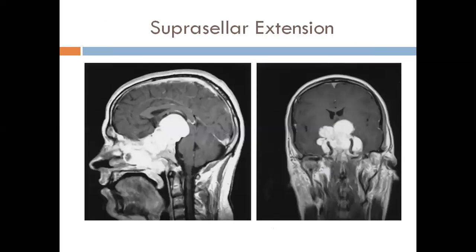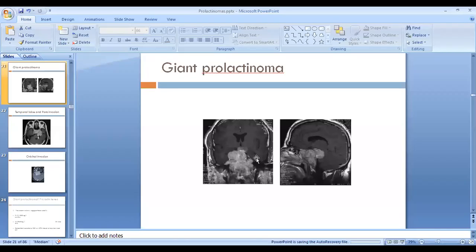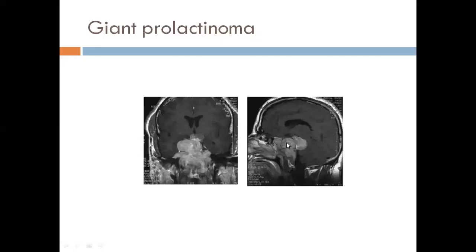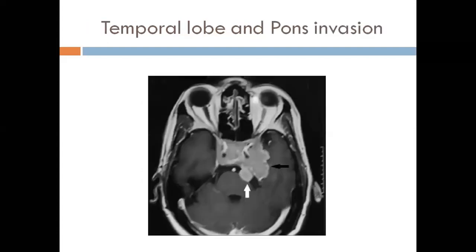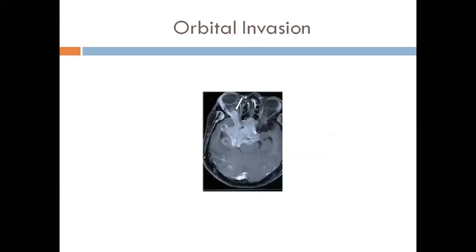This MRI image shows a huge prolactin-secreting tumor — these tumors can get quite large. You can barely see the pituitary tissue, and the optic chiasm is not even visible. Another image shows temporal lobe and pons invasion by the tumor, and another shows orbital involvement.